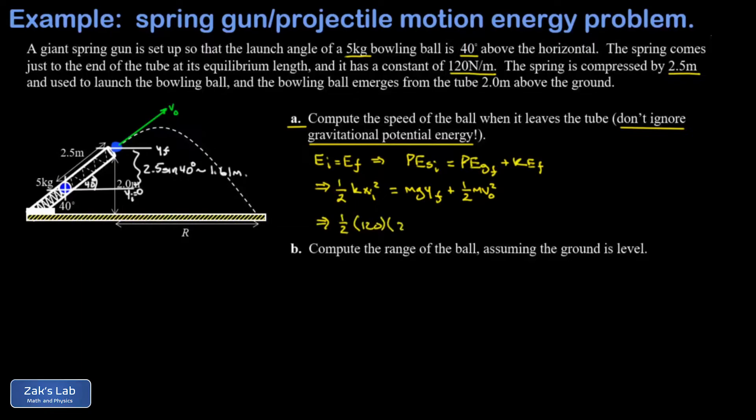The mass of the bowling ball is 5 kilograms. G is 9.8. My final y coordinate when the launch is complete, that's 1.61 meters. And again, m is 5 kilograms. My only unknown there is the speed at the end of the launch process.